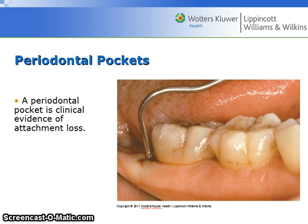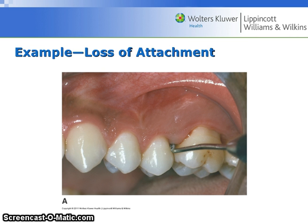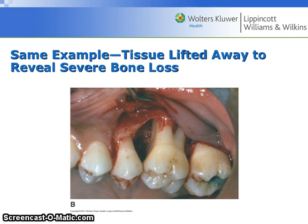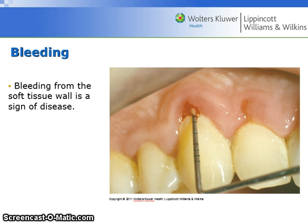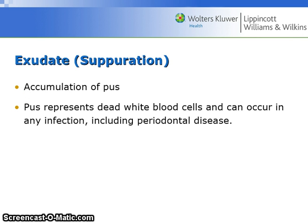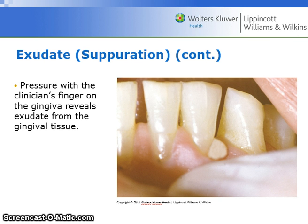A periodontal pocket is clinical evidence of attachment loss. This is figure 15.5 on page 258 — the tissue is lifted away to reveal severe bone loss. Bleeding from a soft tissue wall is a sign of disease. Exudate or suppuration is an accumulation of pus, representing dead white blood cells, and can occur in any infection including periodontal disease. Pressure with the clinician's finger on the gingiva reveals exudate from the gingival tissue.